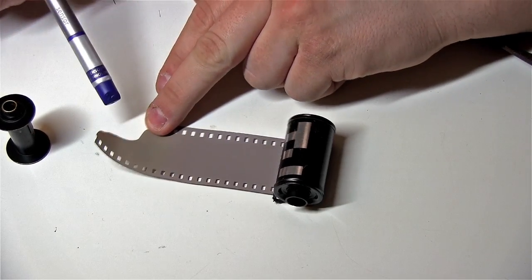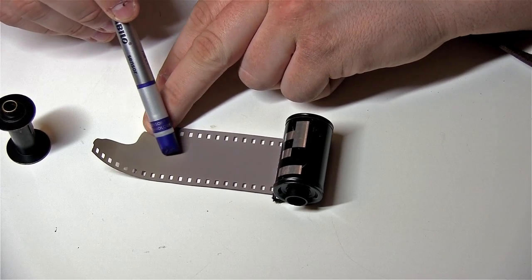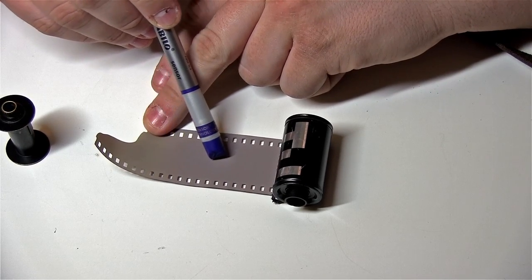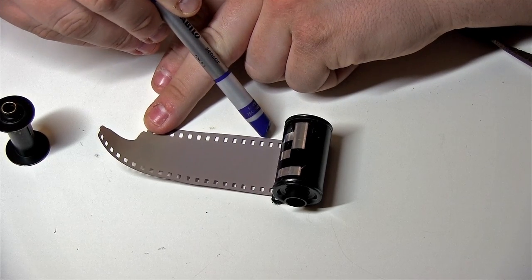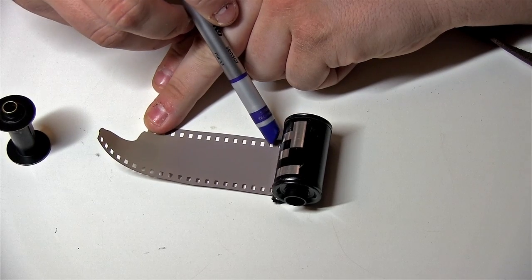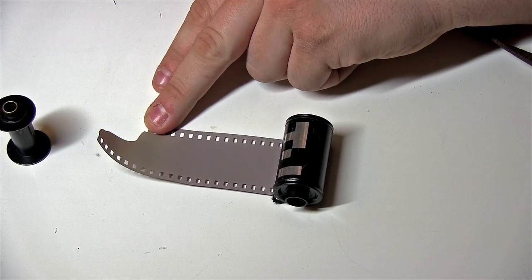Now you'll have to cut it to make the lead longer basically, but at the very end you'll have to keep two sprocket holes. That is very important—to keep two sprocket holes at the end of the lead.